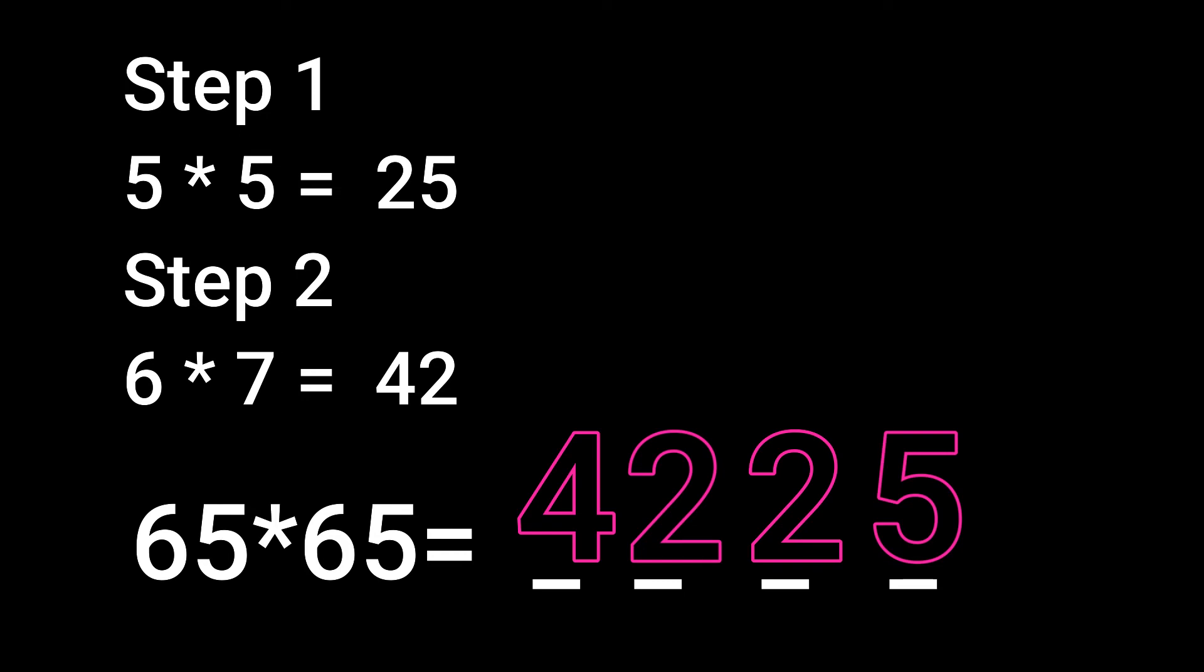The last digits of the answer is 5 into 5 equals 25. The first digits are 6 into 7 equals 42. So, tell me the answer now: 65 into 65 equals 4,225.